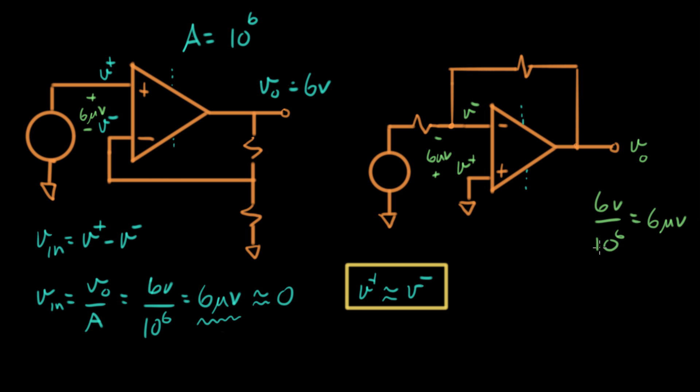So again, because of the enormous gain of this amplifier, this is always gonna be a tiny, tiny number. And so heck, why not make it zero? So if I treat this as zero, what it means is I'm gonna go right in here, and I'm gonna change this to zero volts.